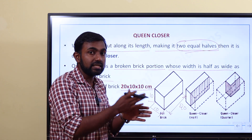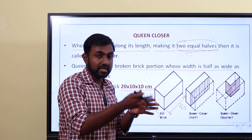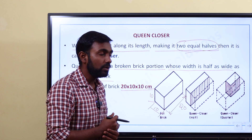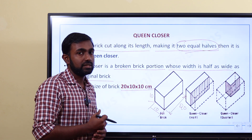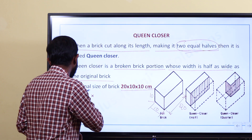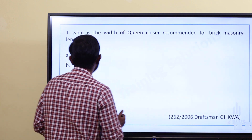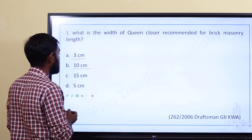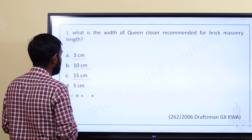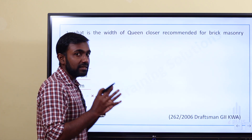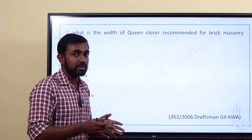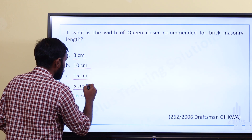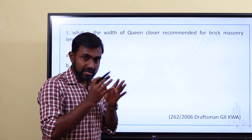The width is cut along its length — that is what we call queen closer. Now let's go to the options. Option A is 3 cm. Option B is 10 cm. Option C is 15 cm. Option D is 5 cm. Since the nominal width of a brick is 10 cm, cut in half gives us 5 cm. That is the correct answer.